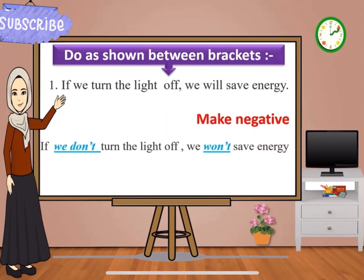If we turn the light off, we will save energy. We want to turn this sentence into the negative form. If we don't turn the light off, we won't save energy.